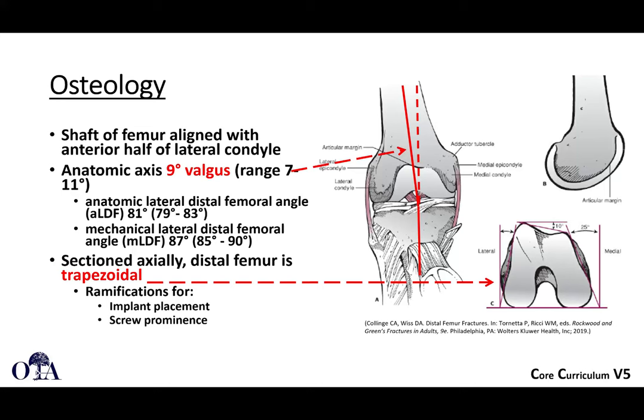Regarding the osteology, the shaft of the femur is aligned with the anterior half of the lateral condyle, and there are 9 degrees of valgus — about 7 to 11 degrees — which you must keep in mind when reconstructing these fractures. Also, the distal femur is trapezoidal, meaning it is shorter from medial to lateral as you go more anterior, and much wider as you go posteriorly.